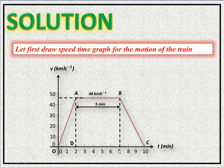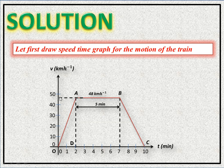On the time axis we go from zero to ten minutes, and on the velocity axis we mark 48 kilometers per hour. The train starts from rest with uniform acceleration, and after two minutes its velocity is 48 km/h. It then travels at 48 km/h for five minutes — up to the seven-minute mark.